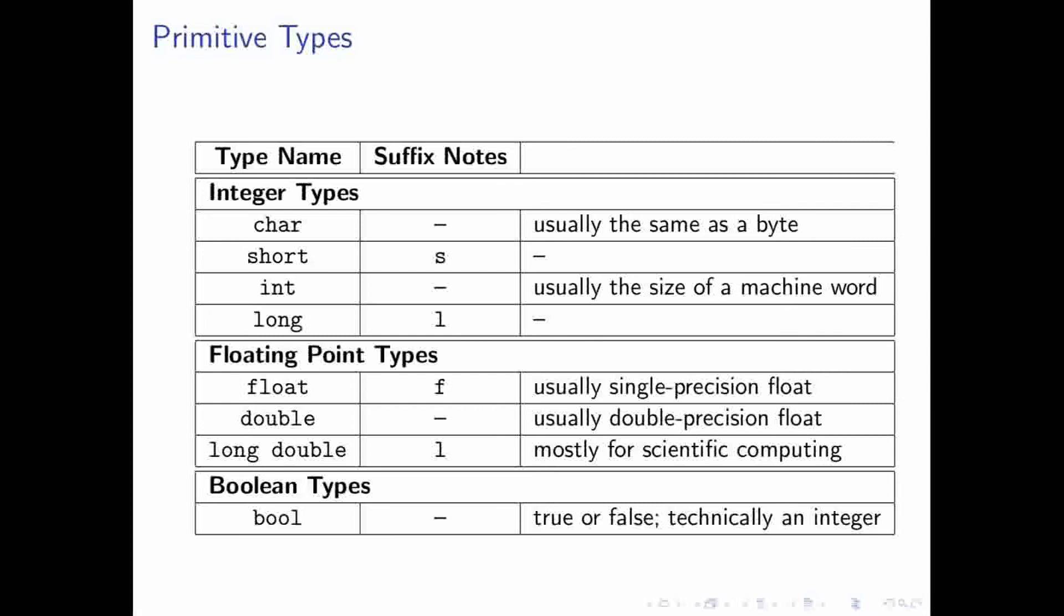So, you have this deal here to where we have different suffixes on the types. This is what, for instance, on the integer literal, what s and l would mean. And so, you could specify a short literal by appending s to it and so forth.